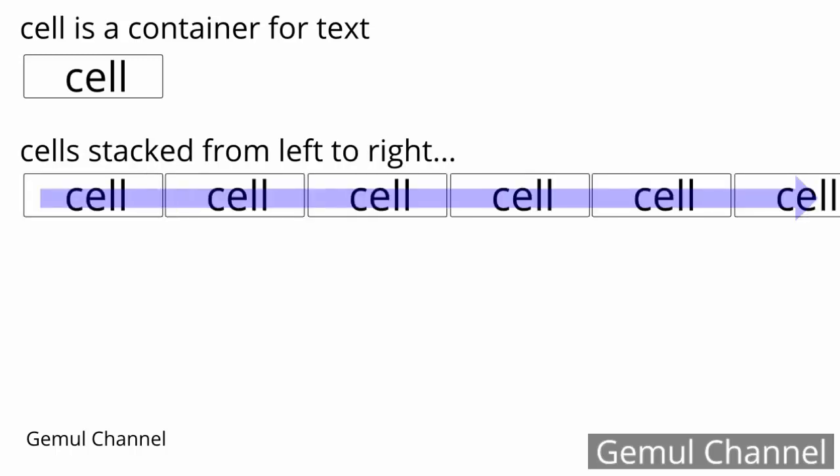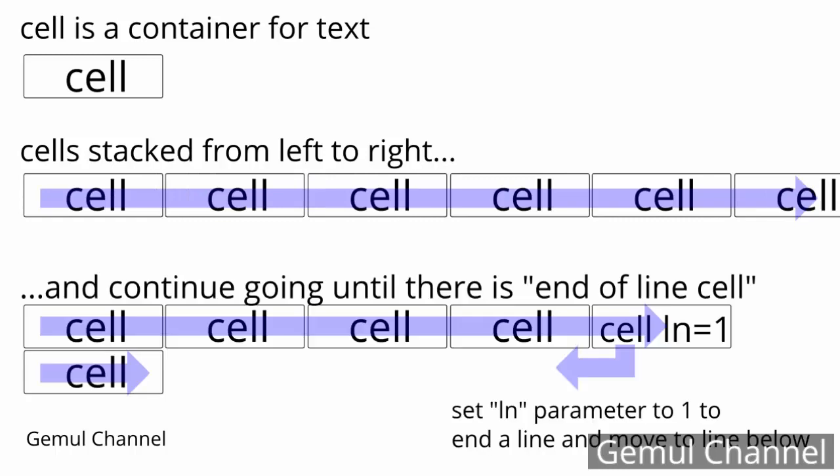Now we're going to fill the PDF with something, but first let me explain how it works. PDF content is written in cells. Imagine a cell as a container — you can only put text in a cell, and each cell has its own properties such as width, height, border, and so on. Cells are stacked horizontally one after another from left to right, and end with a cell defined as an end of line. Imagine an enter button — the next cell after the end-of-line cell is placed below the previous cells, just like pressing enter when typing.